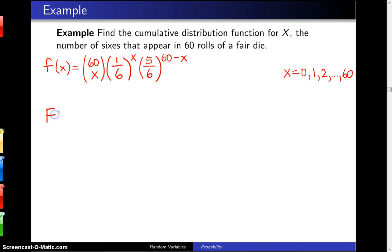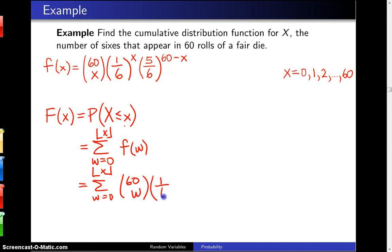And now that we have that in place, we want to calculate capital F of x, the cumulative distribution function, which is the probability that the random variable x is less than or equal to little x. Following the pattern from the previous example, that will be the sum from w equals zero up to the floor of x of f of w, and that will turn out to be the sum from w equals zero to floor of x of 60 choose w, one-sixth raised to the w power, times five-sixths raised to the 60 minus w power. And that particular cumulative distribution function will be good for x values running from negative infinity to infinity.